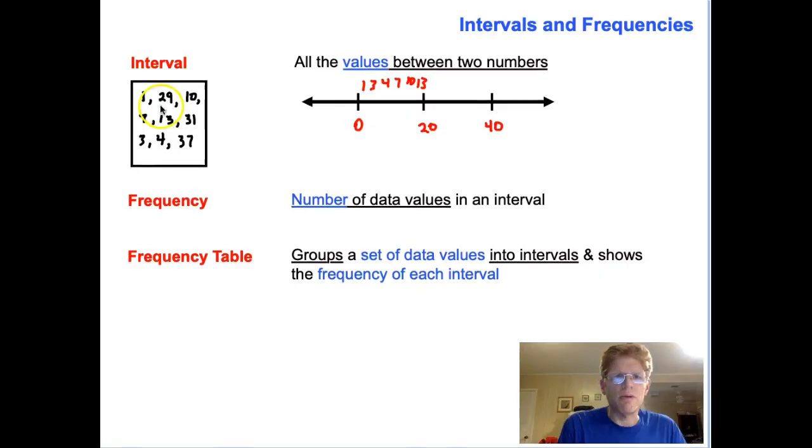Now let's take a look at the values in the interval 20 through 40. We have 29 here, we have 37, and we have 31, so those would be our values in that interval: 29, 31, and 37.